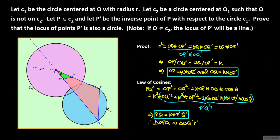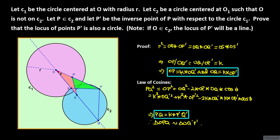It is almost exactly the same proof to show that triangle OPS and triangle OS prime P prime are similar. All we'd have to do is replace the letter Q by the letter S, and we'd have exactly the same proof.